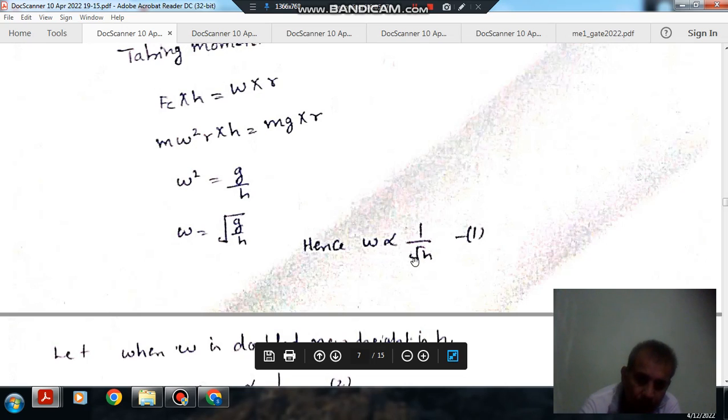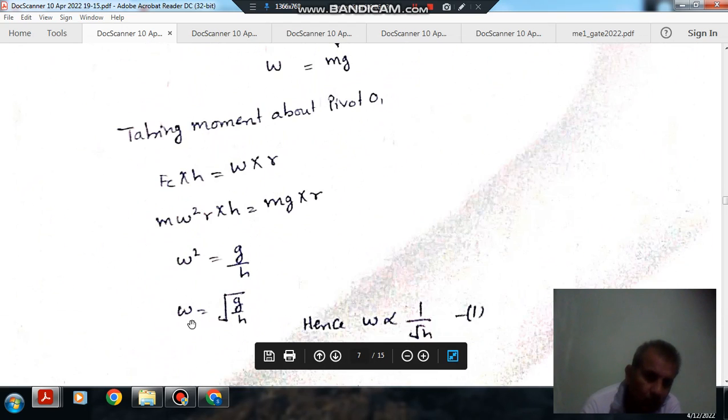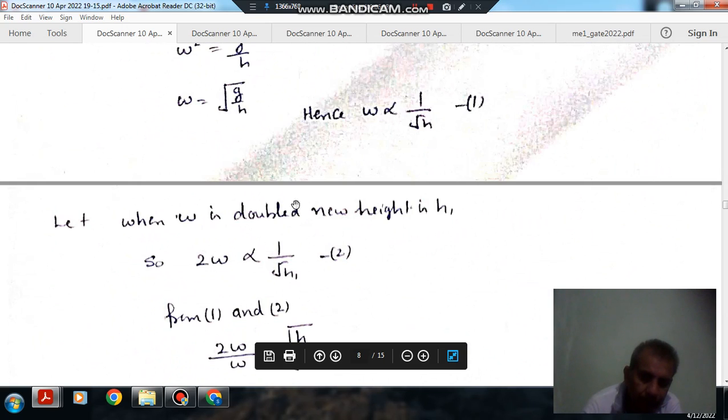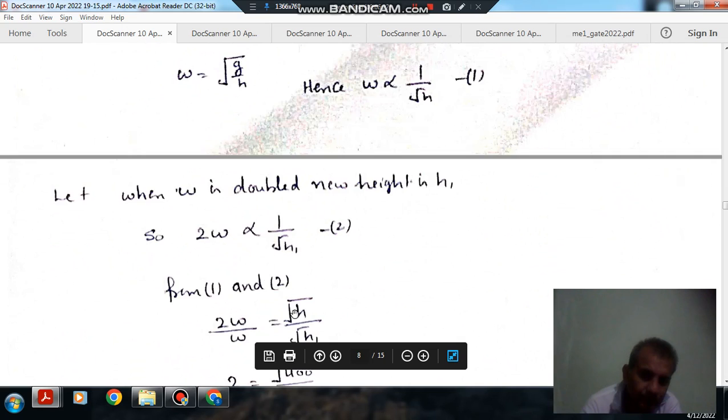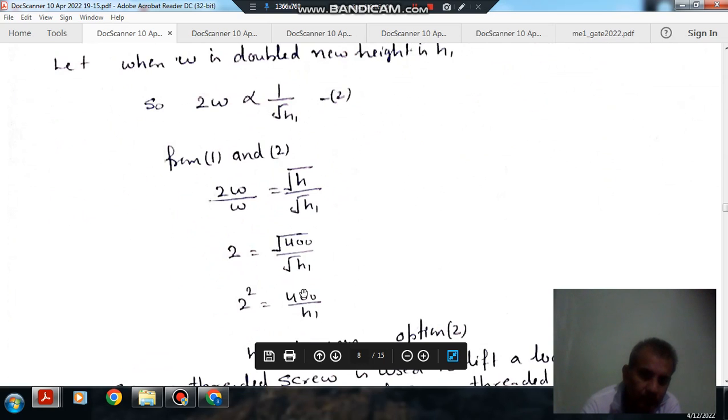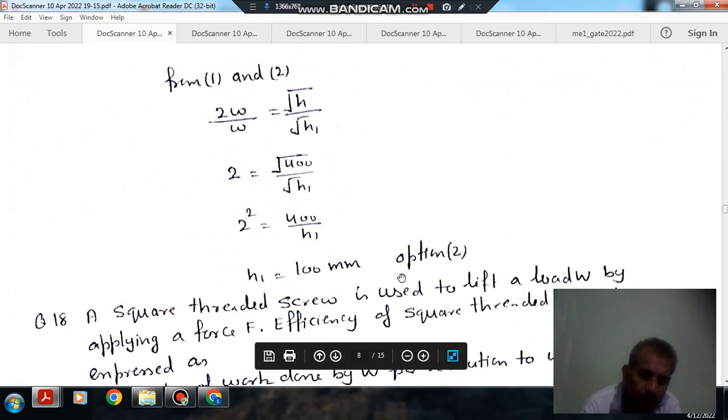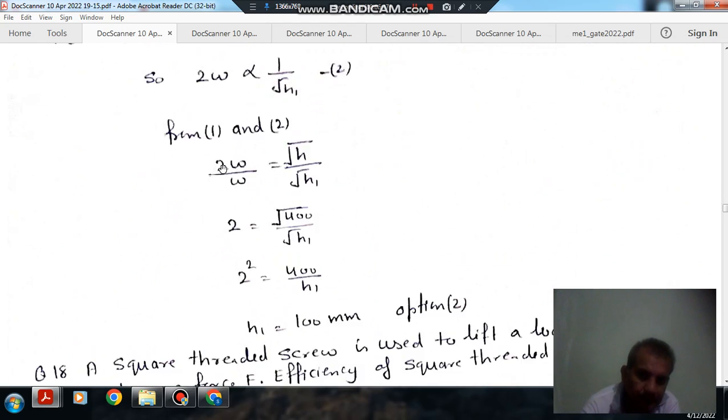Now we can see that omega is actually proportional to 1 by root H. If omega is doubled, we have derived the equation for omega in governor. So here, as omega is doubled, then suppose H1 is a new height, because when omega is doubled, centrifugal force will take this ball to the left. So H will change. So now new H is H1. From 1 and 2, 2 omega by omega is root H by root H1. So H1 will be 100 mm. Putting the value of H as 400, so H1 will be 100 mm. So this will decrease because of shifting. So option B, 100 mm.